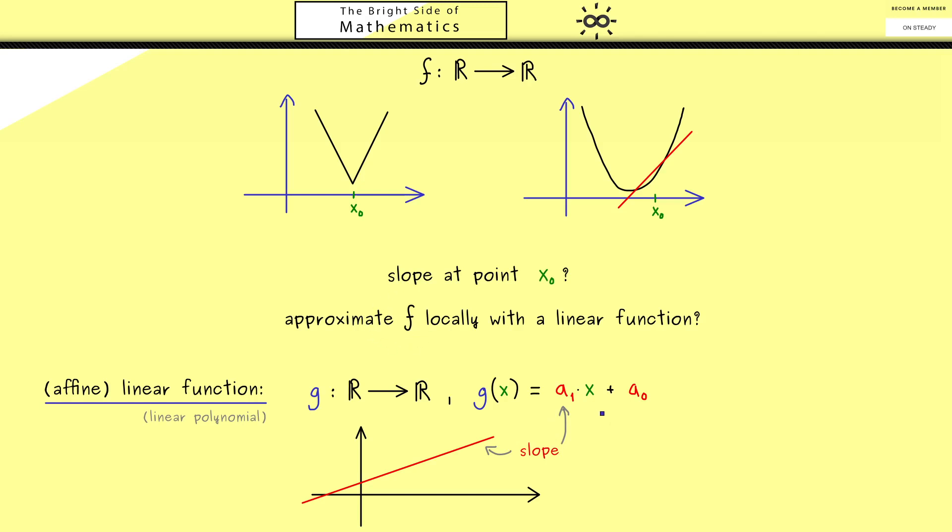Then we would write a constant m times (x - x₀) plus a constant c. Then of course m is the same slope we called a₁ on the left hand side. Of course for us it's now simpler to give it a new name.